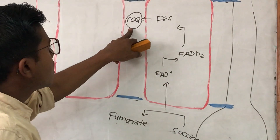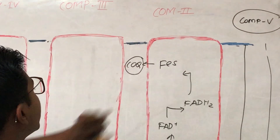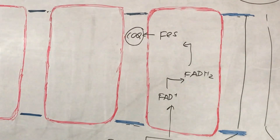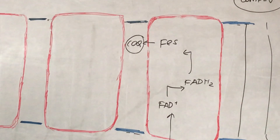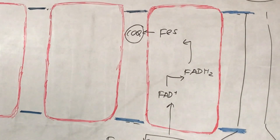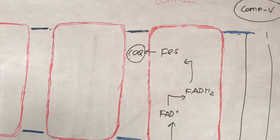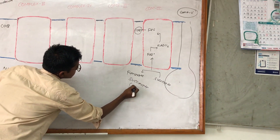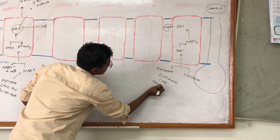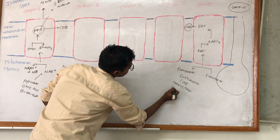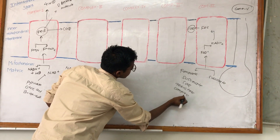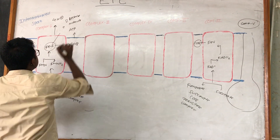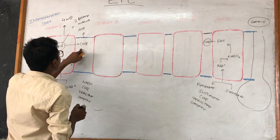Coenzyme Q is a mobile molecule. It transfers its electrons to a complex of cytochromes, and this complex is known as succinate coenzyme Q reductase. This is the first site of ATP synthesis, as it is donating electrons.